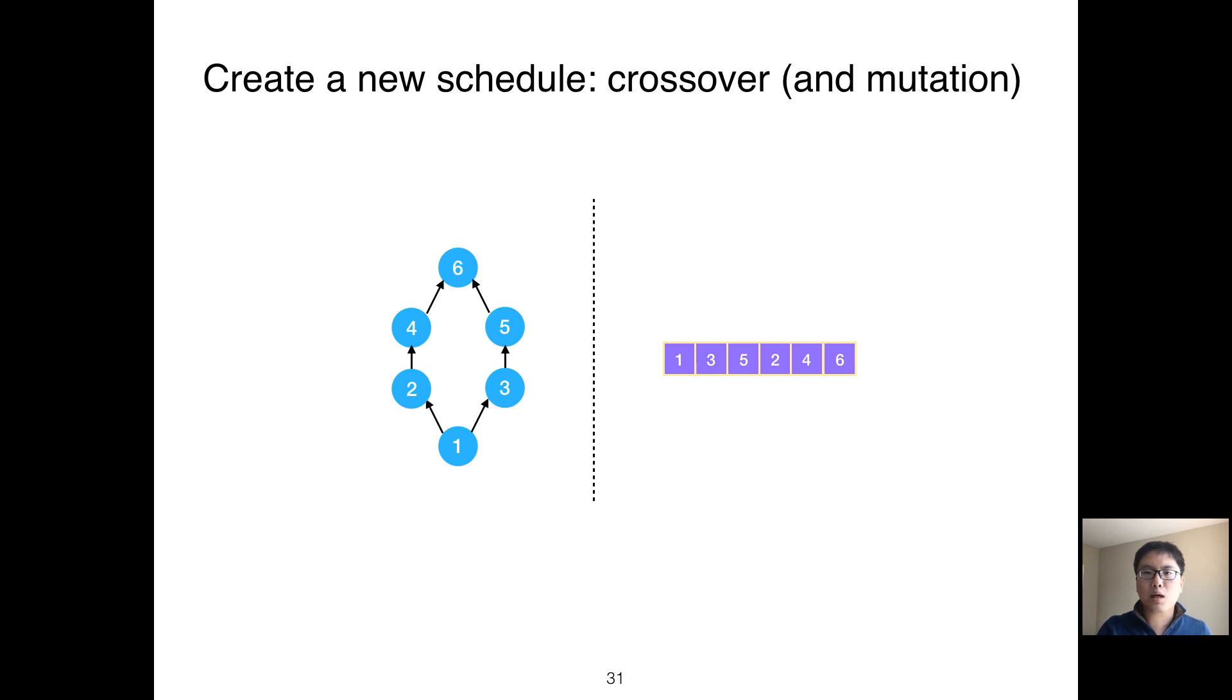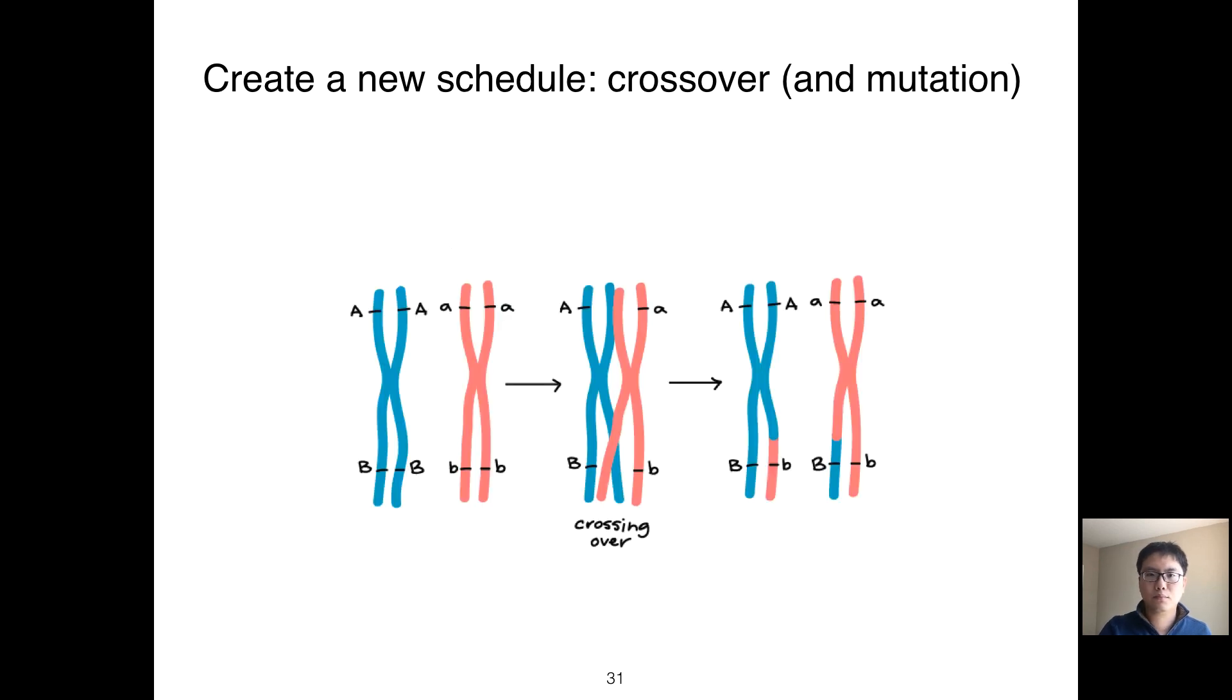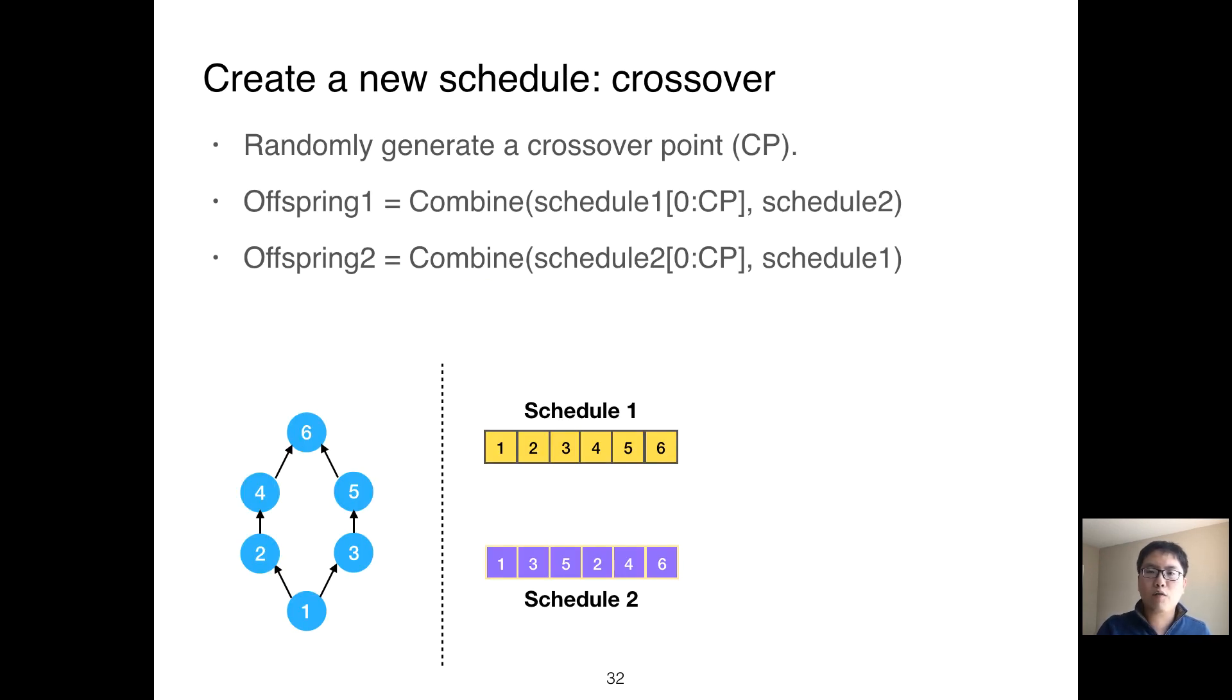We discuss the crossover here. Crossover is the process to create a new offspring by inheriting features from a pair of parents. To do crossover for two schedules, we first randomly generate a crossover point. In the example, the crossover point is two. To create offspring one, we use the slice of schedule one—the first and second elements—as the first part of offspring one.